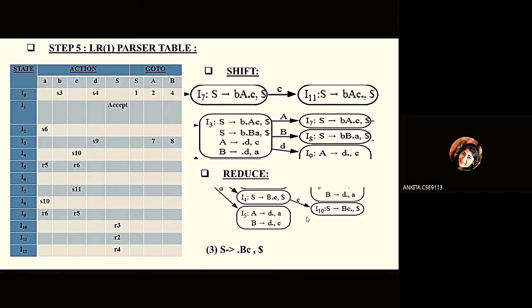Step 5 is LR1 parser table construction. In the parser table, the rows represent the canonical item set states. We have the action table and the goto table. The goto table consists of all variables; the action table consists of all terminals including the dollar symbol. The cell I1 corresponding to dollar is always written as 'accept', meaning the input string is accepted.